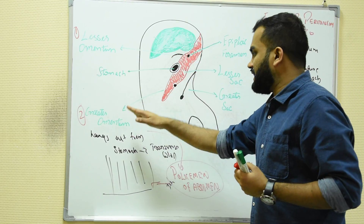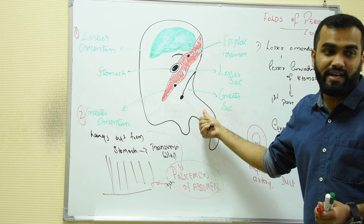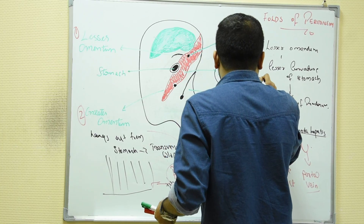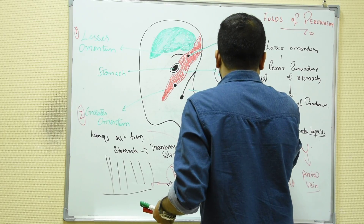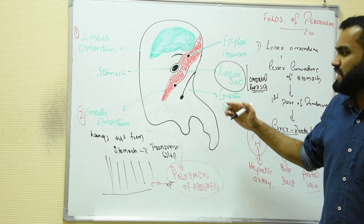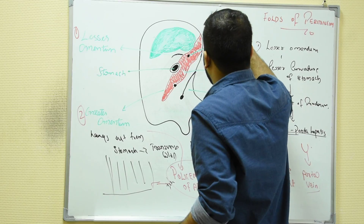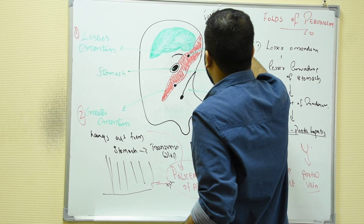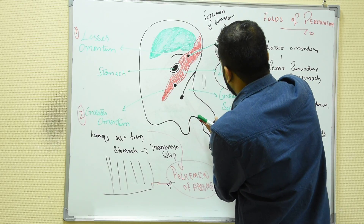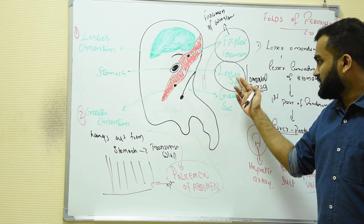The lesser omentum and greater omentum divide our peritoneal cavity into two sacs: the lesser sac and the greater sac. The lesser sac is also called the omental bursa, and it is located at the posterior wall of the stomach. The greater sac and lesser sac are connected by a foramen.